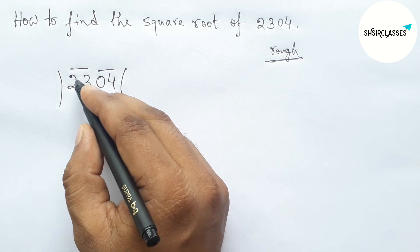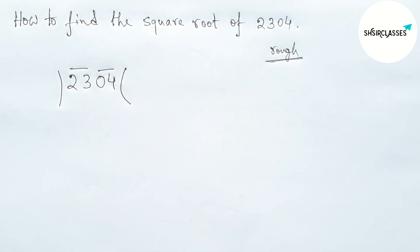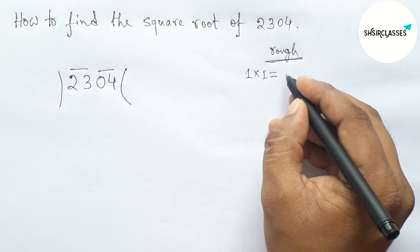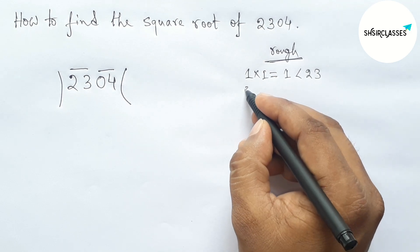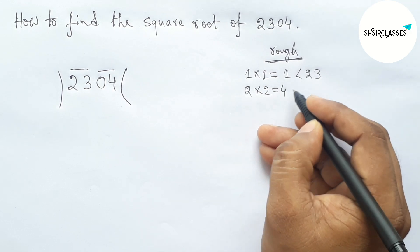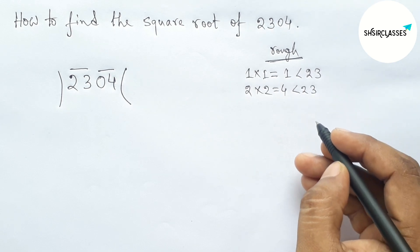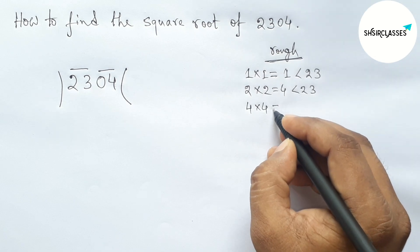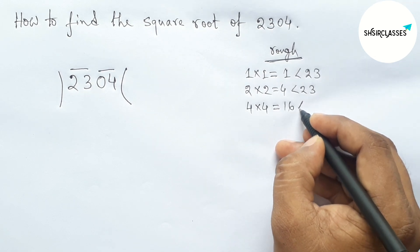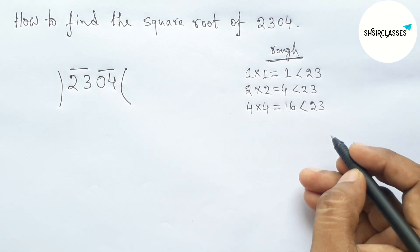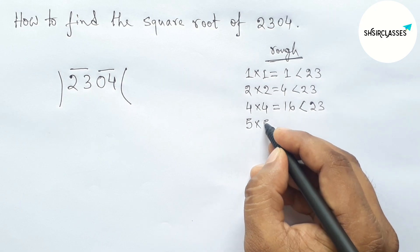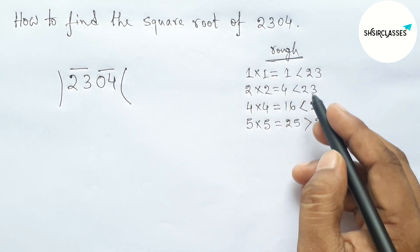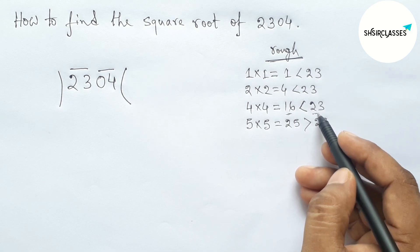Next, roughly discussing here some important calculations. So first choose here a number and multiplying by that number which is less than or equal to 23. So first choose here 1 and multiplying by 1, so this is less than 23. Taking 2 and multiplying by 2, which is less than 23 but not more closer to 23. So directly taking here 4 and multiplying by 4, so 16 which is less than 23.